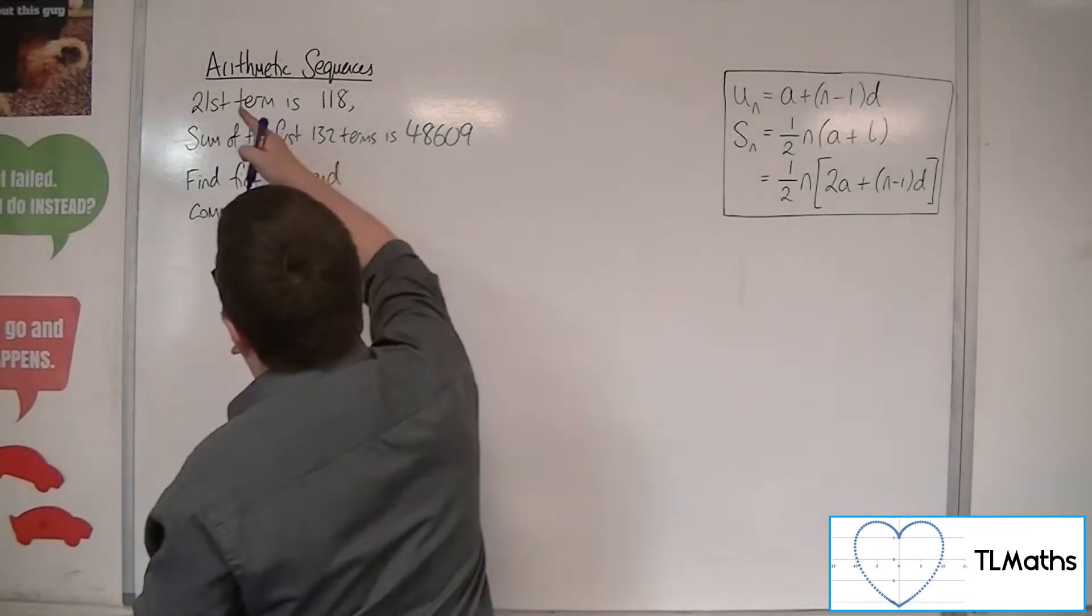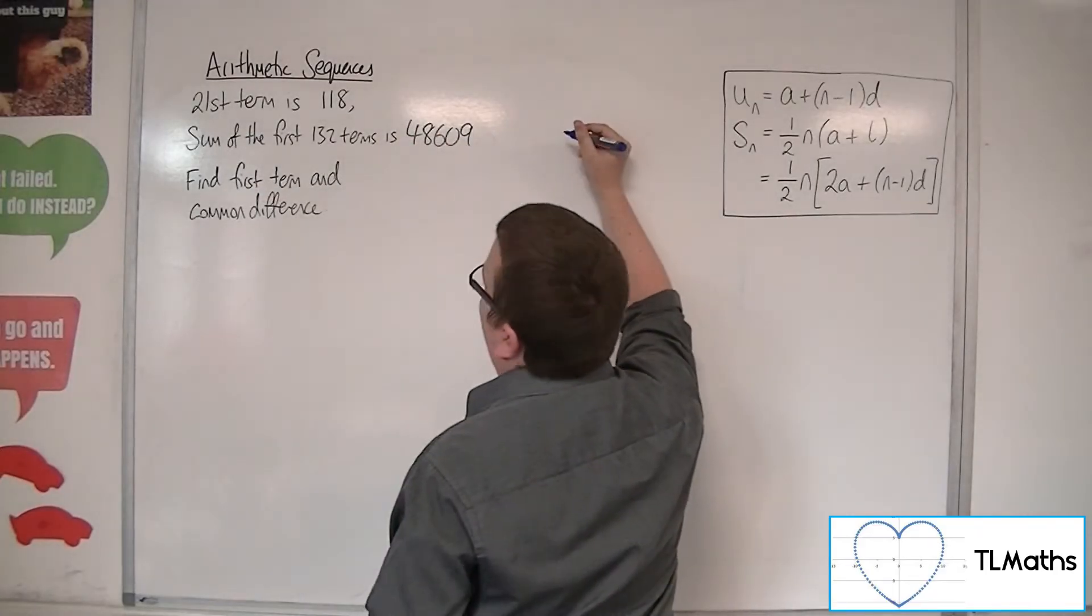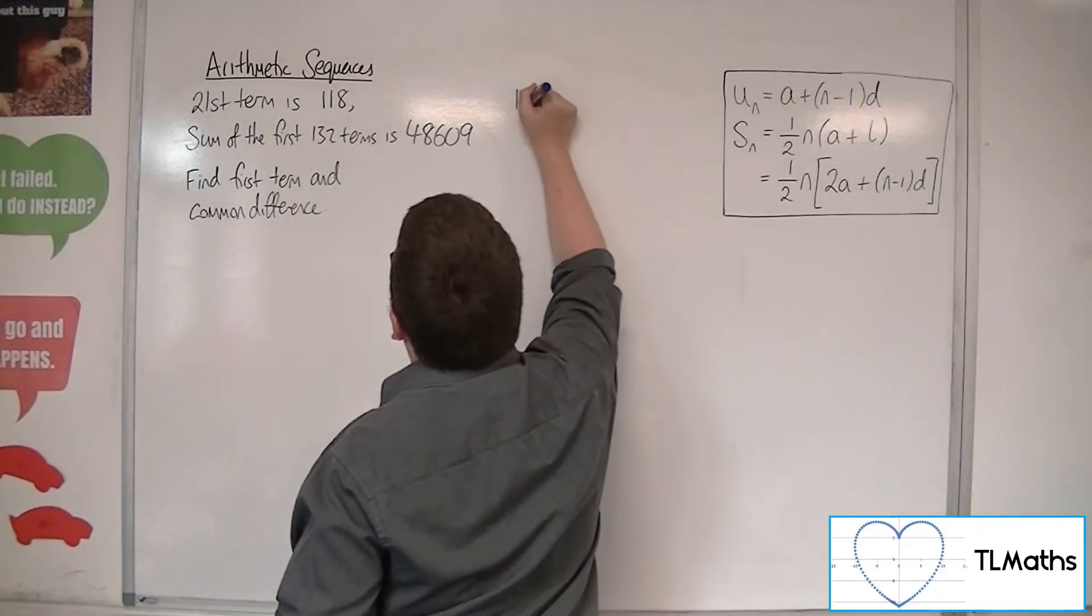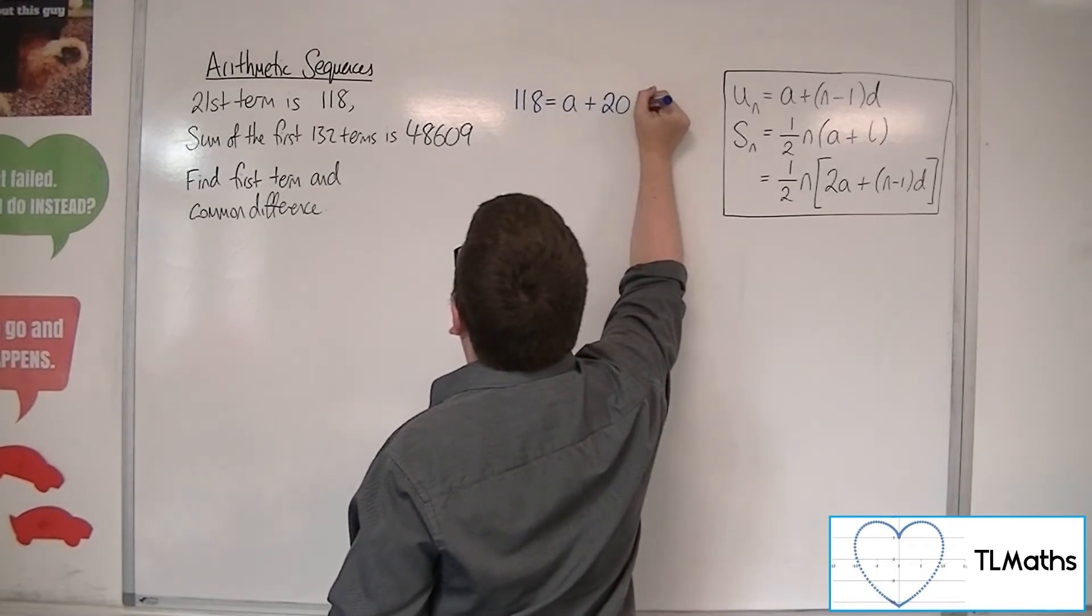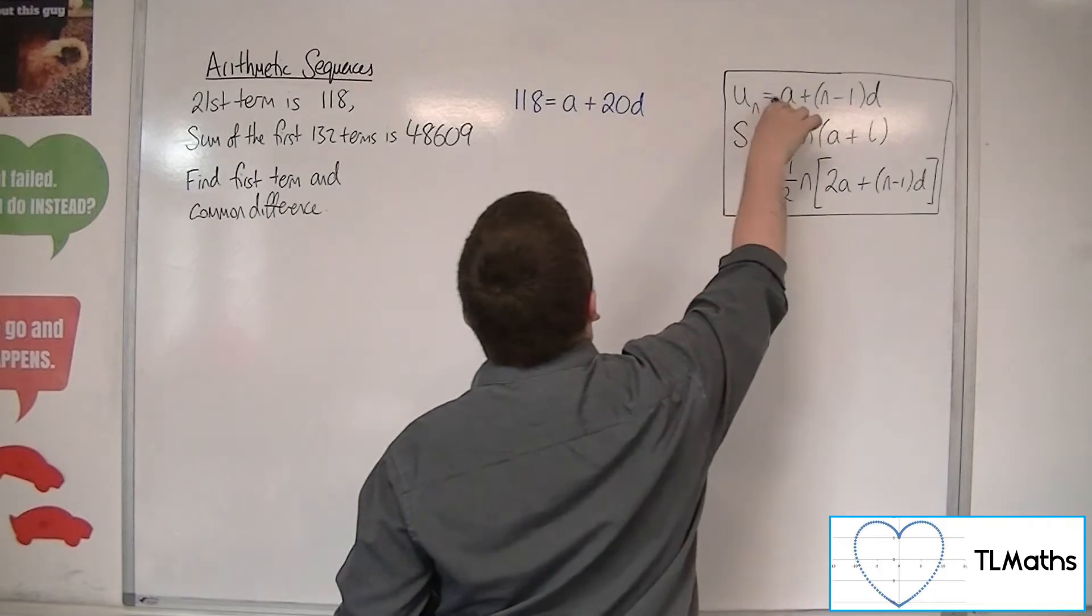So, if I'm told that the 21st term is 118, then I know that 118 is equal to A plus N minus 1, so 20D, using that formula there.